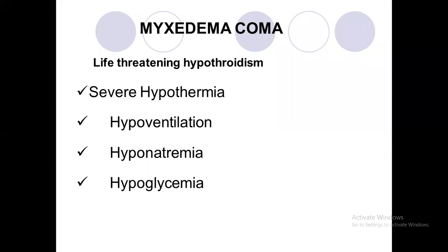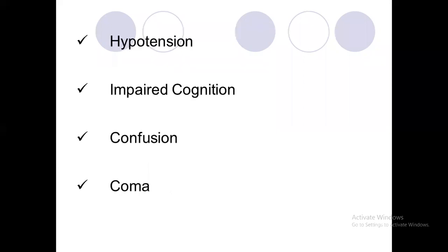In myxedema coma, the patient develops severe hypothermia, hypoventilation, hyponatremia, hypoglycemia, hypotension, impaired cognition, confusion, and finally coma. This may lead to death because most of these patients are severely dehydrated with hypotension, and everything is slowed down.